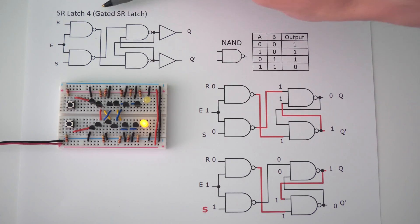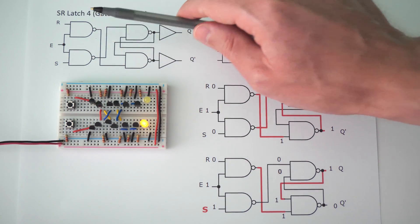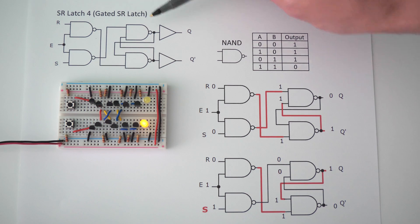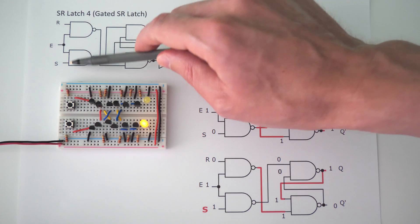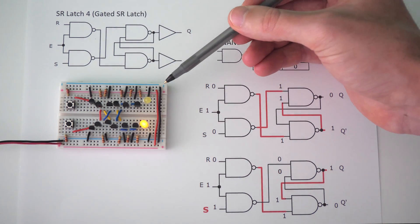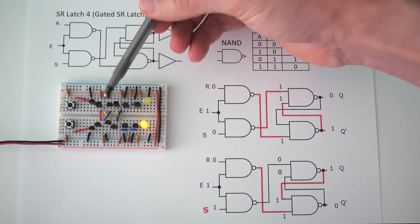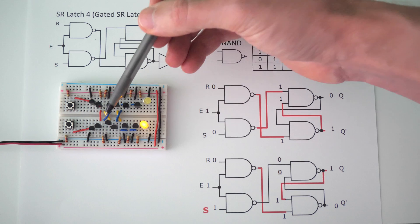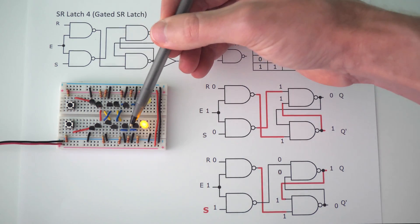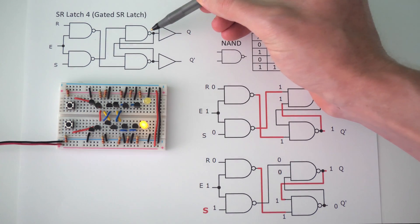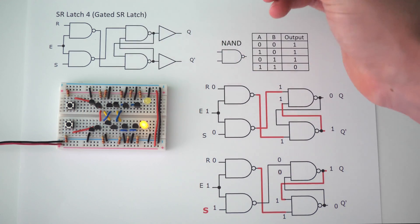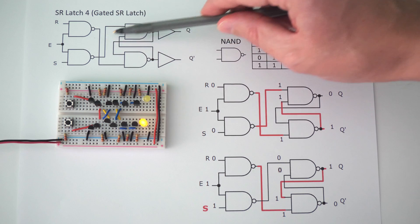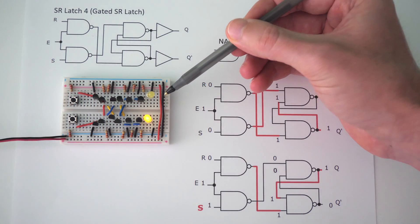SR latch 4 is a gated SR latch. Notice that we have a set and a reset pin, but now we also have an enable pin. This is built using four NAND gates and is very similar to SR latch 3, except instead of the buffers, we now have two NAND gates. These two transistors are the top NAND gate, these two are the second NAND gate, these two are the top buffer, these two are the bottom NAND gate, these two are the second bottom NAND gate, and these last two are the last buffer. The output from the top NAND gate goes into the input of the bottom NAND gate, and the output of the bottom NAND gate goes into the input of the top NAND gate, with the outputs crisscrossed.